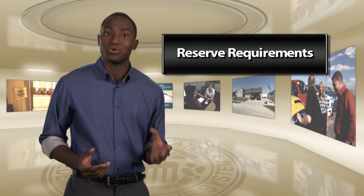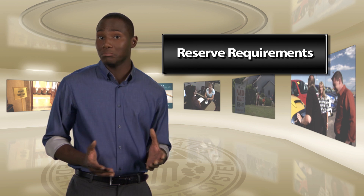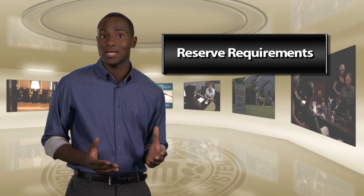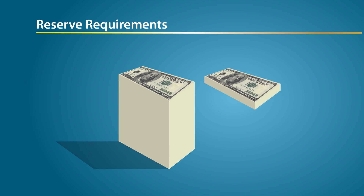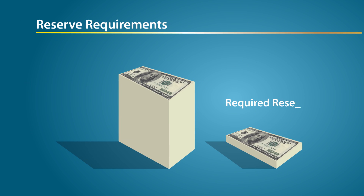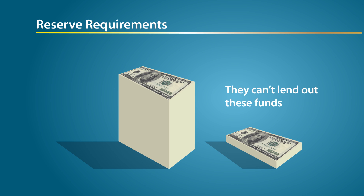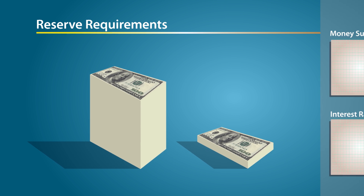Another tool that the Federal Reserve could use to implement its monetary policy is reserve requirements. Required reserves are the funds that banks or other financial institutions must have on hand as cash in their vaults or on deposit in their accounts at the Federal Reserve. They can't lend out these funds. Adjusting reserve requirements could be used to affect the money supply and interest rates.